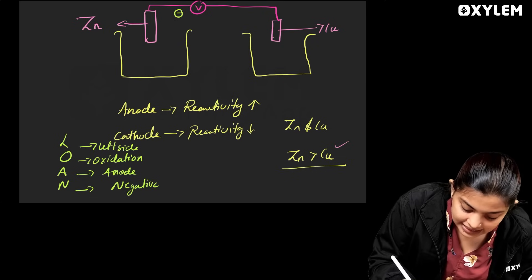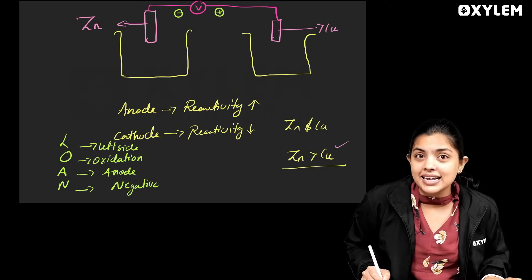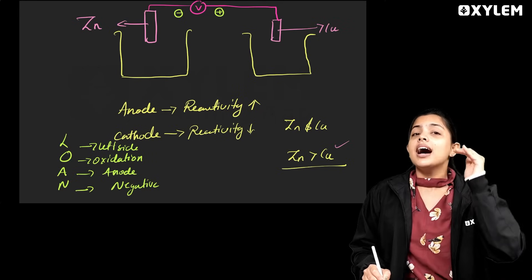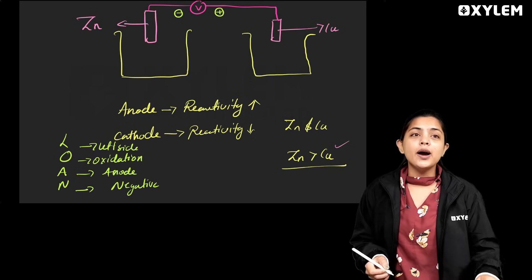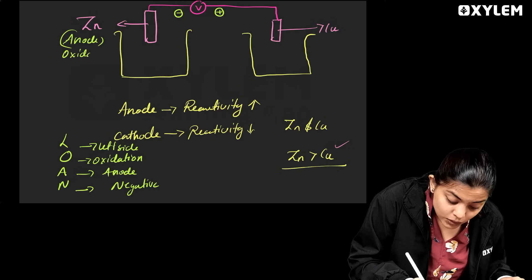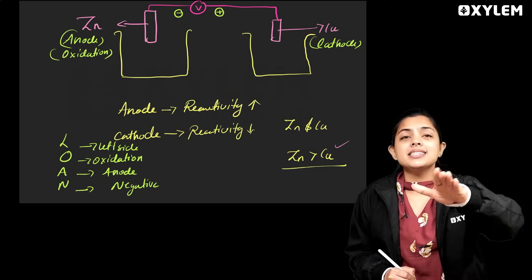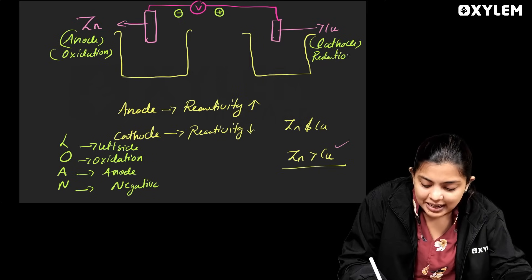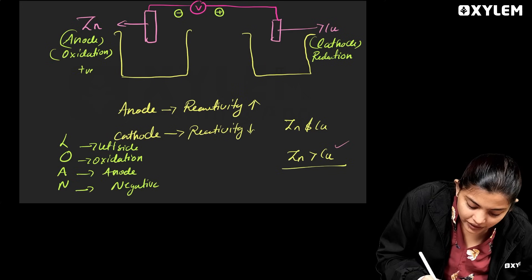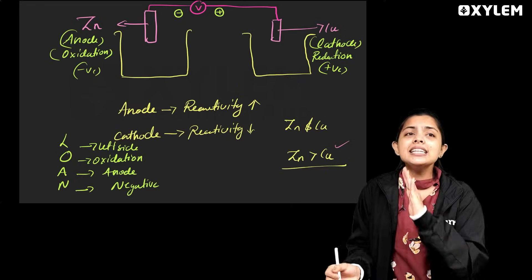If you say the left side of the voltmeter, this is the negative terminal — it's the anode. The left side is the anode, and the oxidation at the anode gives a negative charge. If you say the right side, the correct charge is the right side of the anode — we call these electrons.